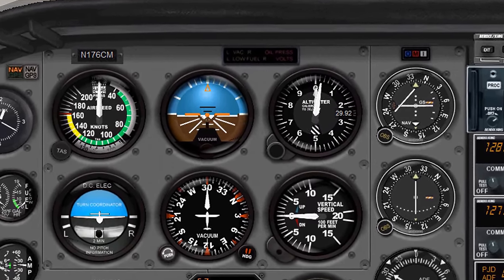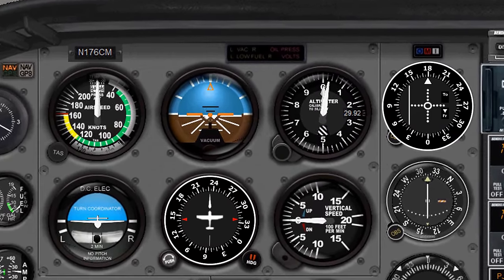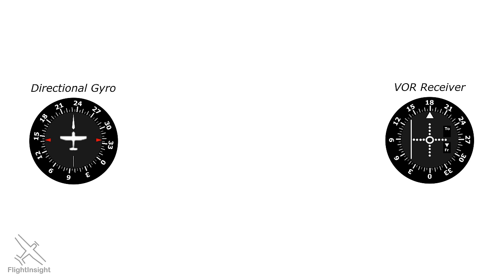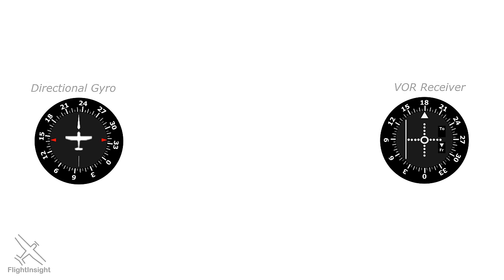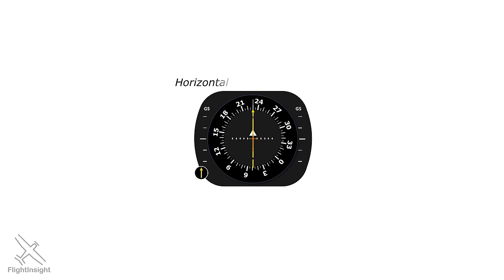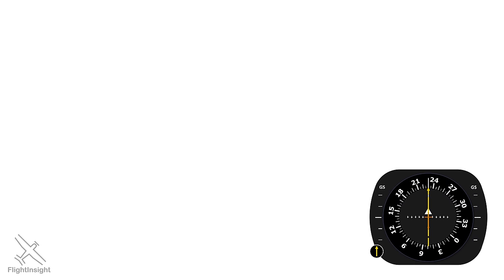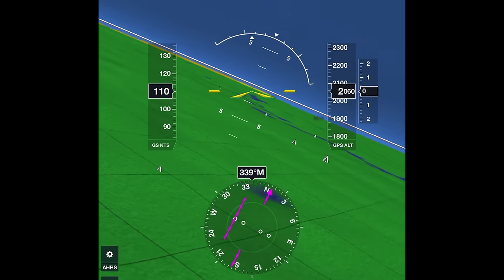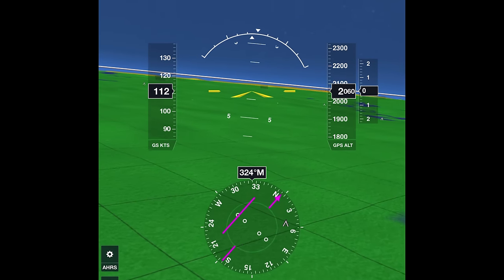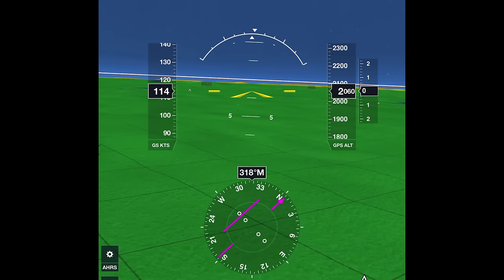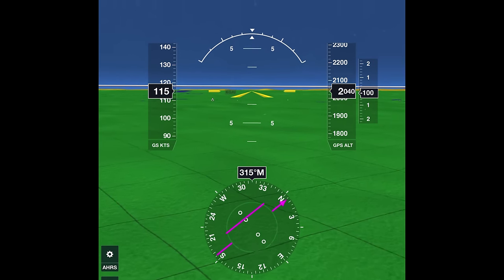This is the story of when two instruments, the directional gyro and the VOR receiver, met up and became close, creating a single new instrument called the Horizontal Situation Indicator, or HSI. The HSI is a combination of these two instruments, allowing you to have heading and navigational information in one place, making your instrument scan easier.